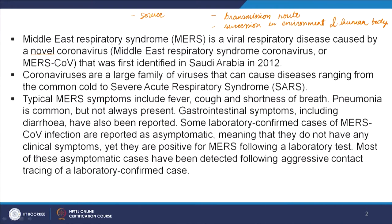Coronaviruses are a large family of viruses that cause diseases ranging from the common cold to SARS. Before MERS there was a SARS epidemic in China and other Asian countries — Severe Acute Respiratory Syndrome — with very severe symptoms, very effectively contained by Chinese authorities. Typical MERS syndrome includes fever, cough and shortness of breath. Pneumonia is common but not always present. Gastrointestinal symptoms including diarrhea were also reported. Some lab-confirmed cases were asymptomatic — no symptoms, but the patients could still transmit disease.